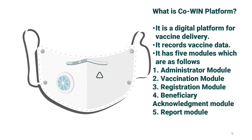CoWIN uses temperature loggers for accurate remote temperature monitoring in real time. It has five different modules: the Administrator Module, Vaccination Module, Registration Module, Beneficiary Acknowledgement Module, and the Report Module.